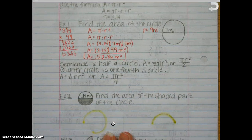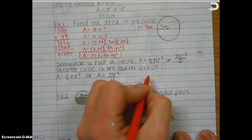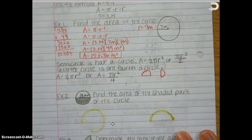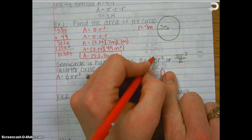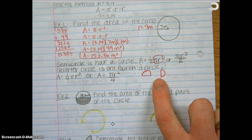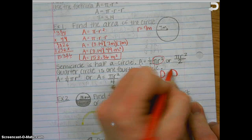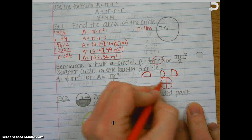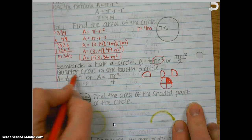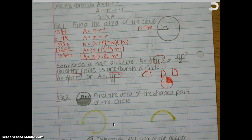Now, also in 7th grade, a little more challenging is going to be a semi-circle. A semi-circle is going to be half a circle. So basically you're just taking half the area. The formula is: area equals one-half times pi times radius squared. Or you could take the area and divide it by 2 — it's going to work either way. Then, a quarter circle is going to be one-fourth of a circle. You'd find the area and just find one-fourth of it — so one-fourth times the area formula, or take the area formula and divide it by 4. I've got two examples here, so let's work those out.